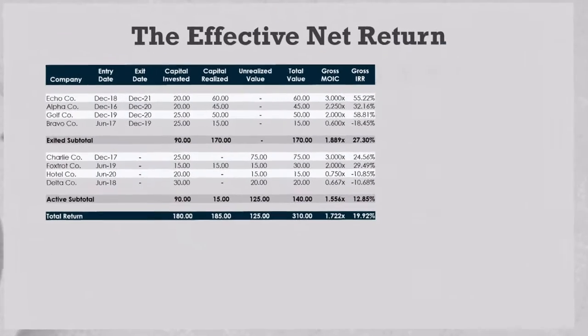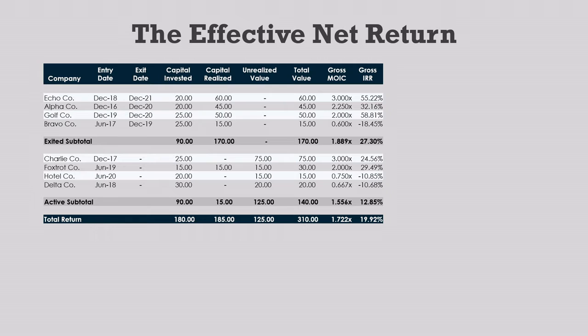Here's a portfolio we used in the last two videos. Let's pretend that we don't have access to the underlying cash flow data. We know the management fees and fund expenses add up to $25 million, but other than that, all we have is this table. First we calculate the portfolio's fee and expense multiplier. As we discussed last time, that's 1 plus 25 over gross invested capital 180. This gives us an F&E multiplier of 1.139x.